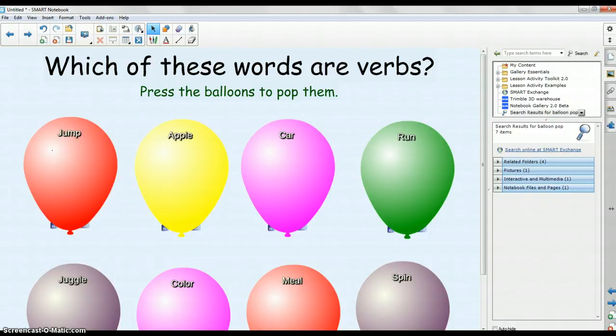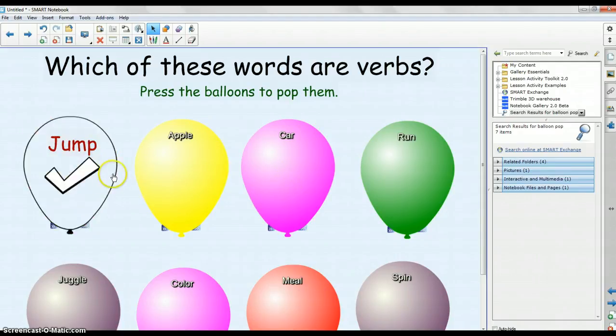For those of you not familiar with Balloon Pop, it is a lesson activity page in Smart Notebook where students can actually come up to the Smart Board and pop balloons to figure out if they're correct or incorrect. This is just an example that Smart Notebook gives you where students need to figure out which words are verbs. And what they do is they click on the balloon and it pops and it tells you if your word is correct or incorrect.